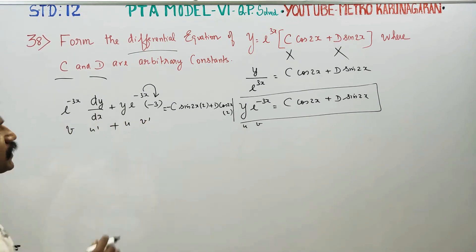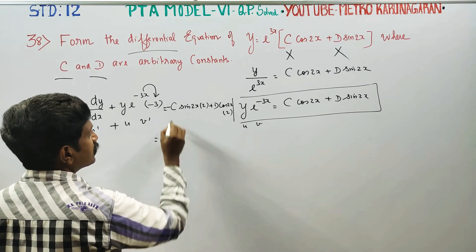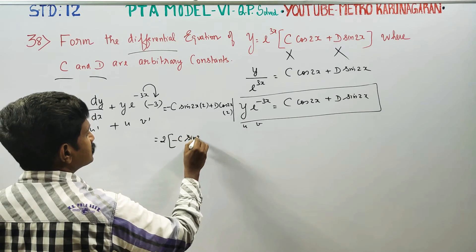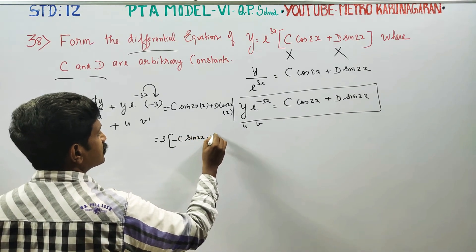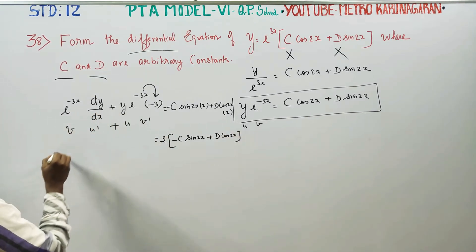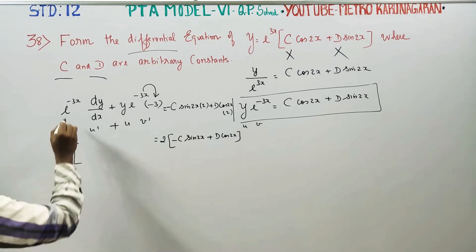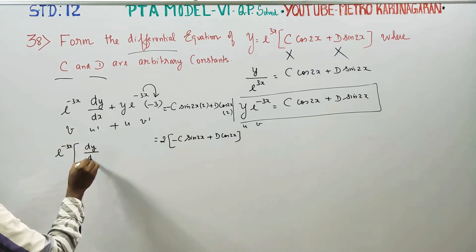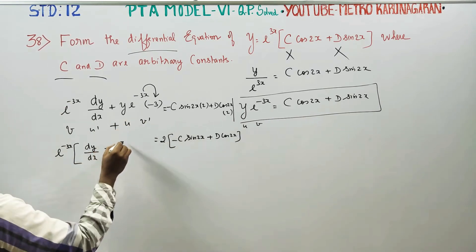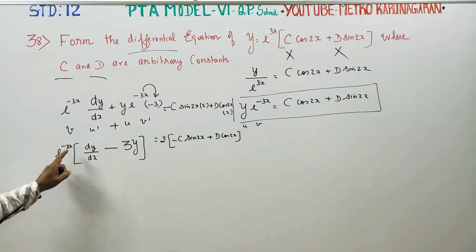Now in the first stage, the differentiation gives two values. The bracket contains −C·sin2x + D·cos2x, multiplied by 2. Taking e^(−3x) as common, the balance gives dy/dx equal to e^(−3x)(−2C·sin2x + 2D·cos2x) minus 3·e^(−3x)(C·cos2x + D·sin2x), which equals e^(−3x) times the bracket, where e^(−3x) is the value of y's factor.